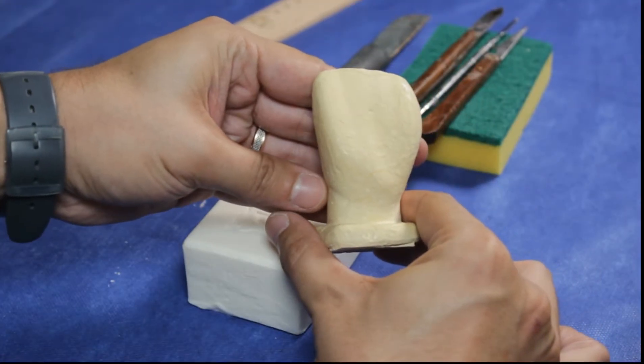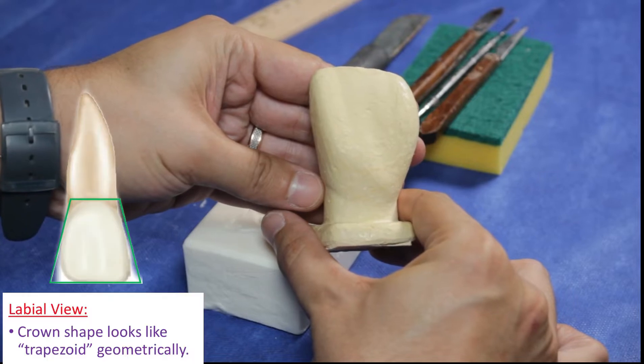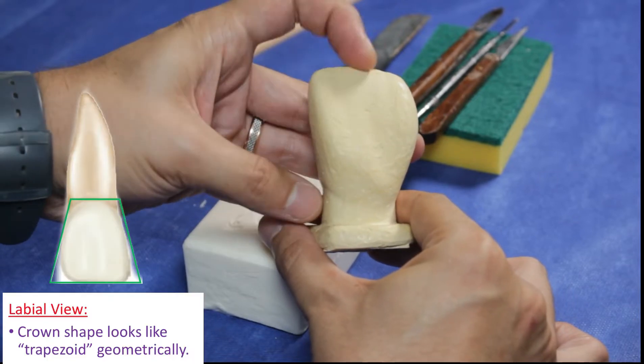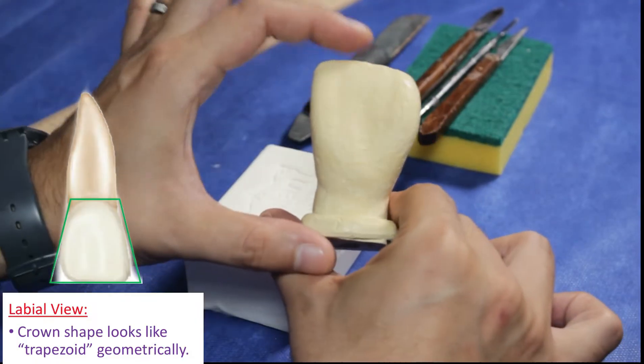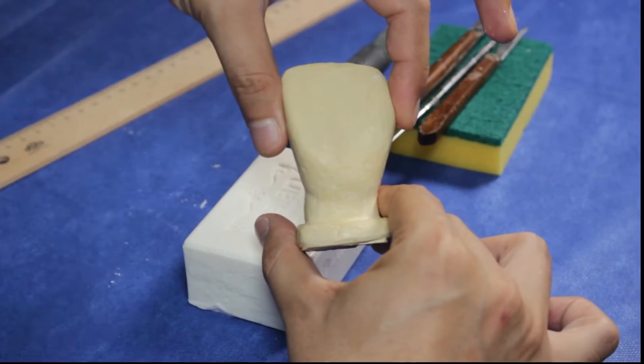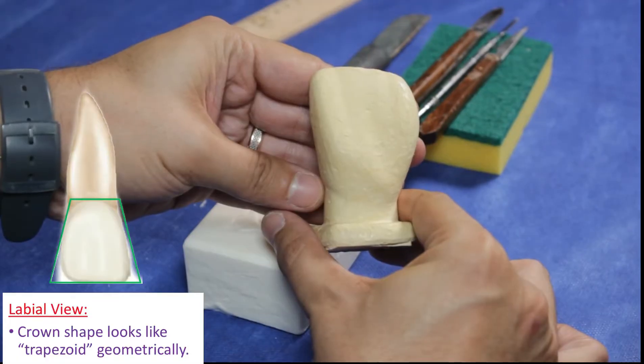As you can see, I will use a plaster model for you to understand and visualize easily. Also, please follow the notes I added. Carving a tooth is a three-dimensional task, so let's talk about what we see briefly.